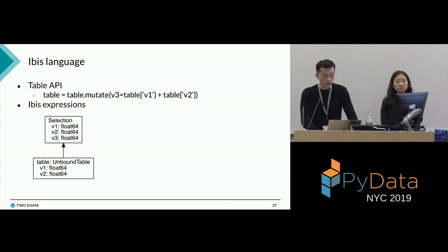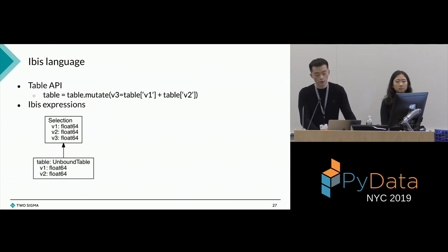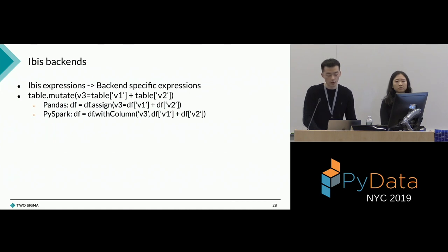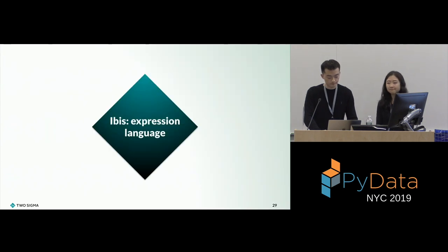Here's a quick example of what that looks like in actual code. I'm calling a very simple projection — adding a new column which has the sum of two other columns. Here's the IBIS API to do it. I'm showing the IBIS expression using the built-in visualization in IBIS: we have a table and a selection on top of it. The IBIS backend takes that expression and translates it into specific backend code. For example, the same mutate function will translate to an assign if you're using the pandas backend, and it will translate to withColumn if you're using the PySpark backend.